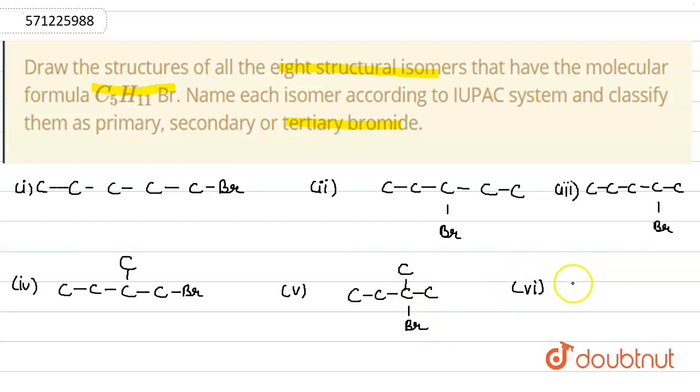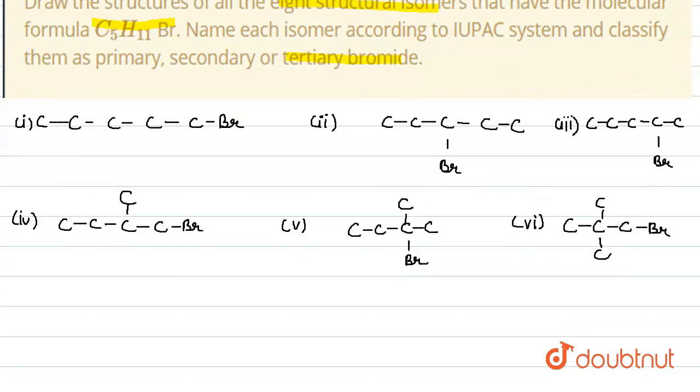Sixth possibility, or this can be possible like we take a tertiary carbon to which a bromine group is attached. Similarly,